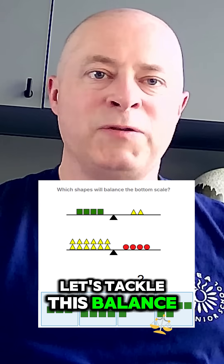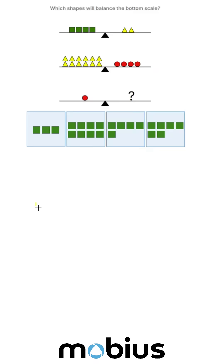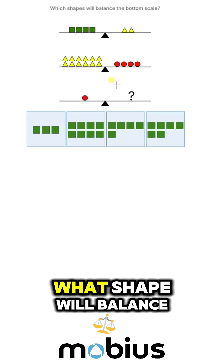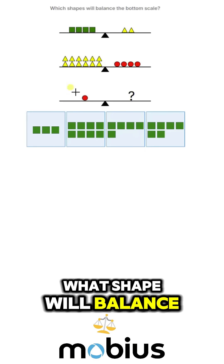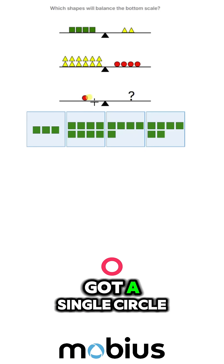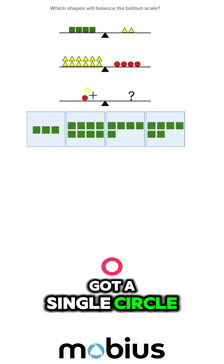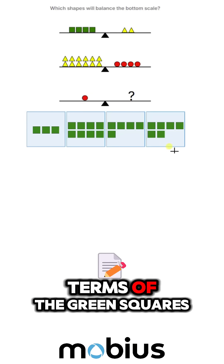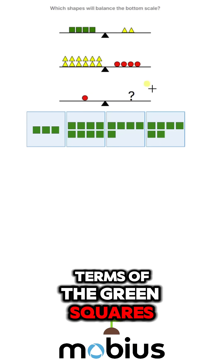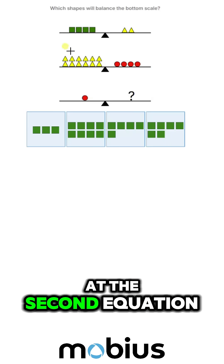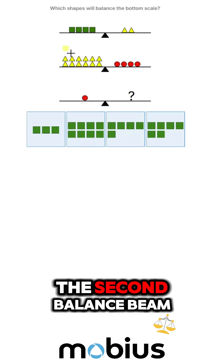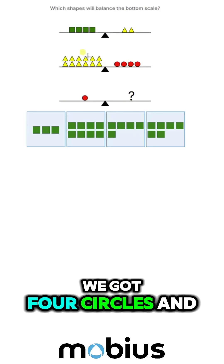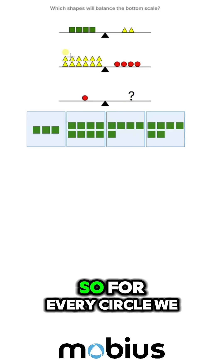Let's tackle this balance beam problem. Let's figure out what shape will balance our bottom scale. We've got a single circle down here and we're asked in terms of the gray squares. If we look at the second balance beam, we've got four circles and 12 triangles.